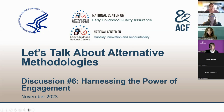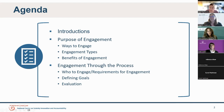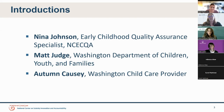I'm going to take a moment to go over our agenda for today. We're going to do some introductions and then jump right into the material. We'll talk about the purpose of engagement, ways to engage, types and benefits of engagement, then engagement through the process, who to engage, requirements, defining goals, and evaluation. Today our presenters are Nina Johnson, Early Childhood Quality Assurance Specialist, Matt Judge from Washington Department of Children, Youth and Families, and Autumn Kazi as a Washington State child care provider.